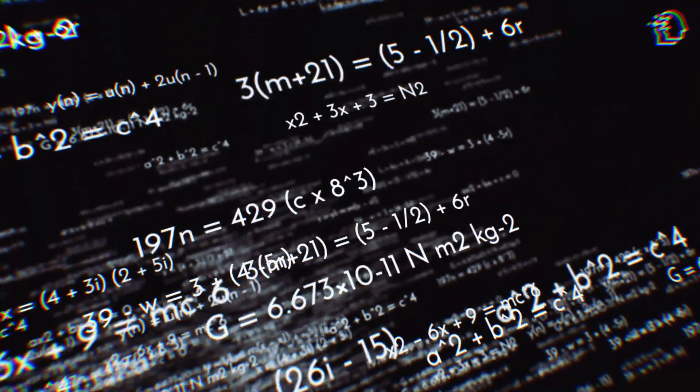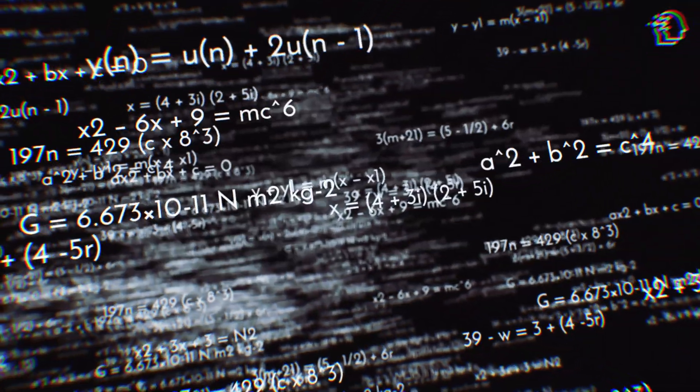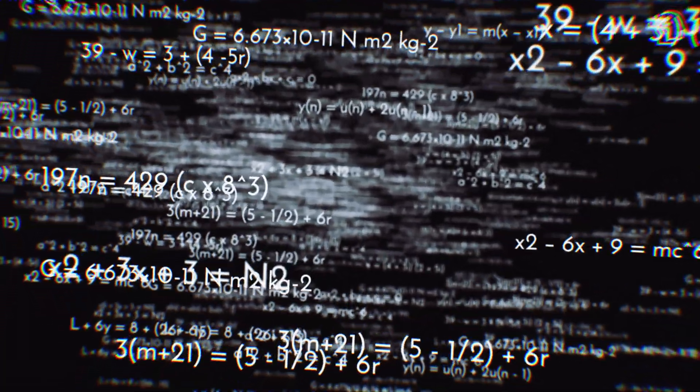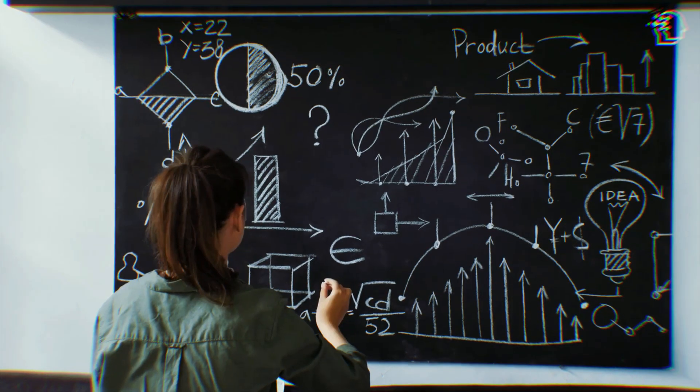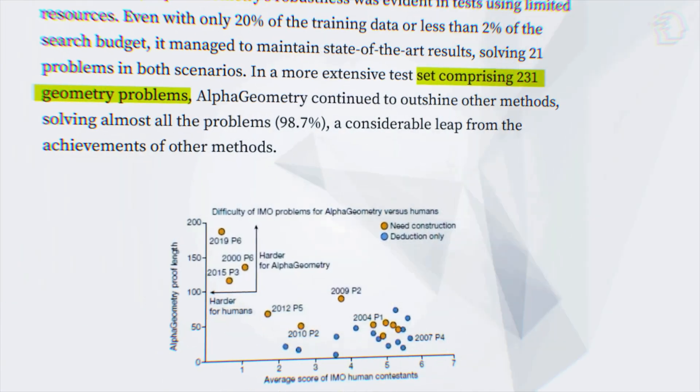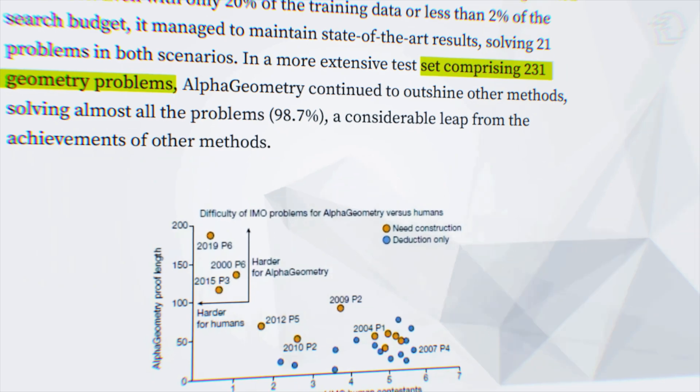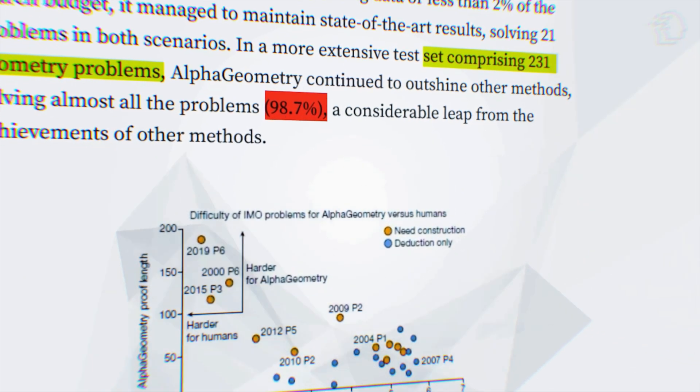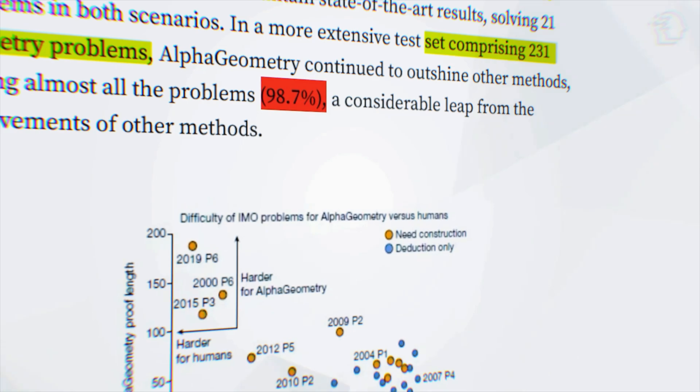AlphaGeometry's performance isn't limited to quantity. Its quality is equally impressive. Faced with limited data or constrained search budgets, it consistently churns out high-quality solutions. In a challenging set of 231 geometry problems, it achieved an astonishing 98.7% success rate, a figure that dwarves other existing methods.